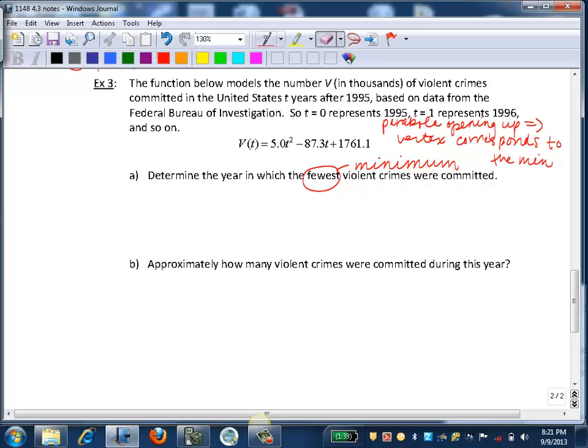So we want to identify in our function here our a, b, and c. If we remember our general form of a quadratic function, f(x) equals ax squared plus bx plus c. In this case, we've got V(t). So we get the t instead of the x, and then the V instead of the f.